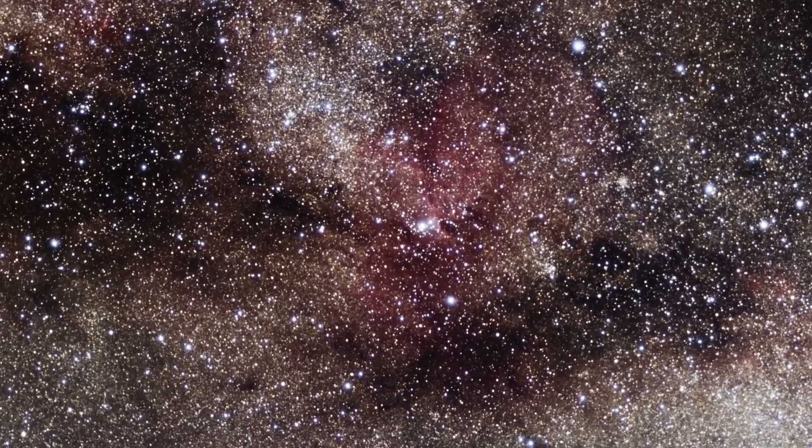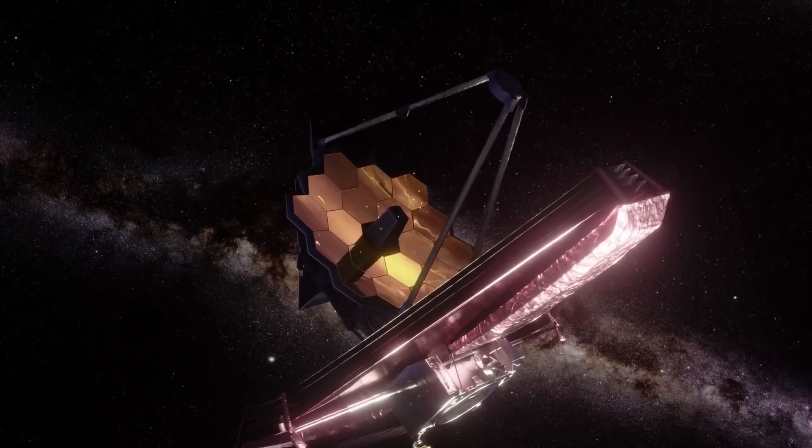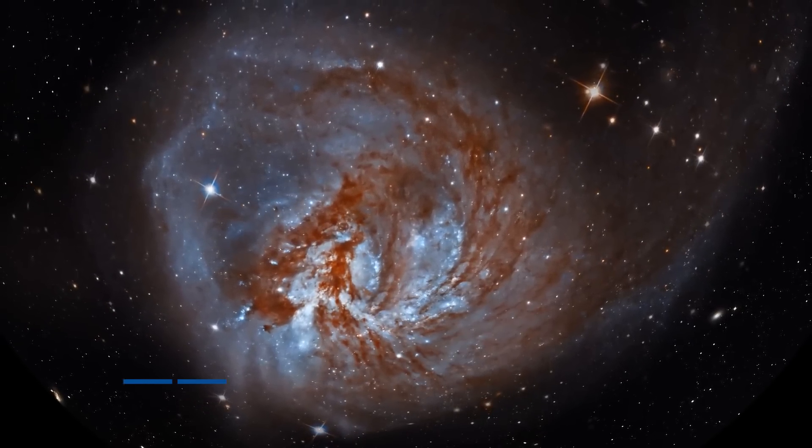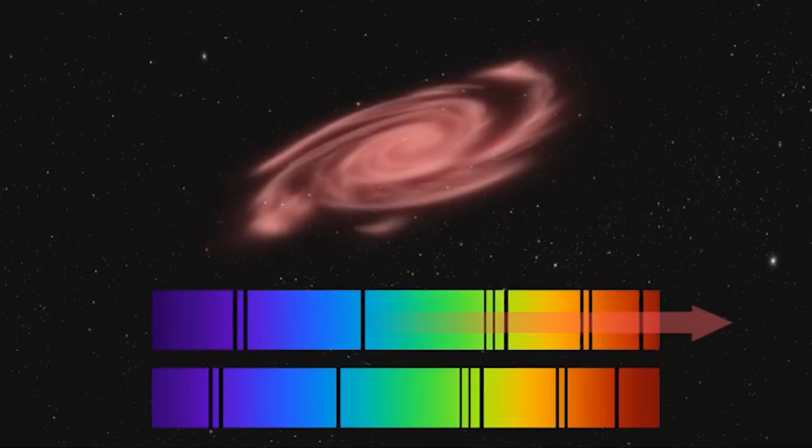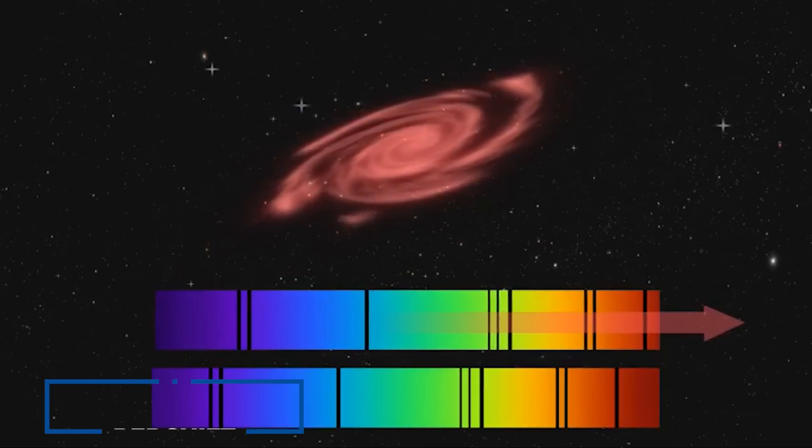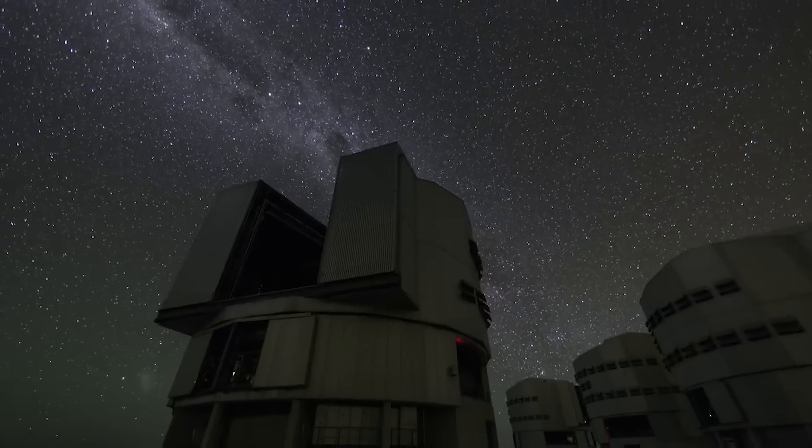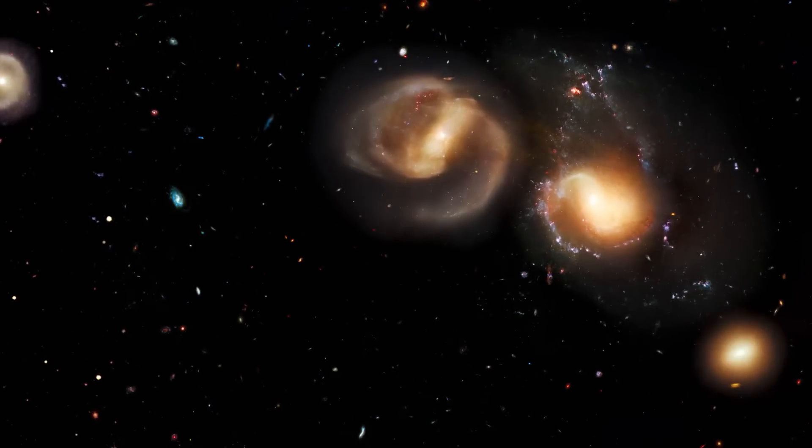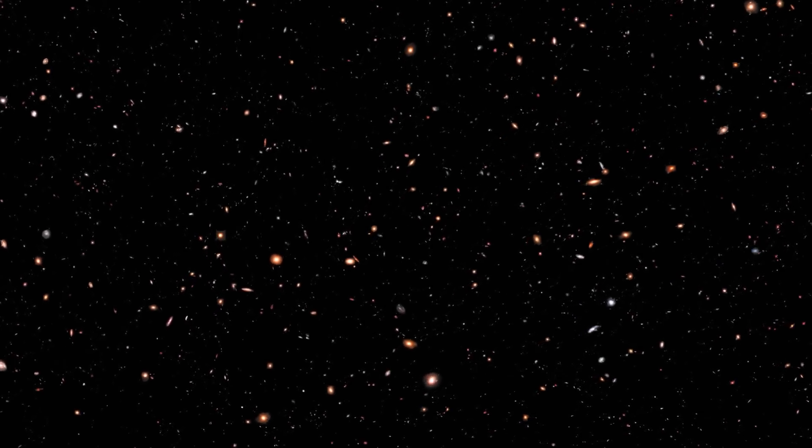But why is this discovery so critical? Well, it validates one of the most important tasks of the James Webb Space Telescope: studying the early universe through light that has been traveling for over 13.5 billion years and whose wavelengths have been stretched by the expansion of the universe, a phenomenon known as redshift. The ability to measure extreme redshifts is what sets the JWST apart, allowing astronomers to peer into the infrared range and observe the earliest galaxies in the universe. And this discovery has caused a seismic shift in our understanding of the universe.